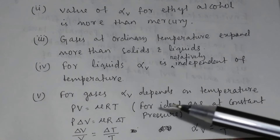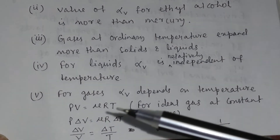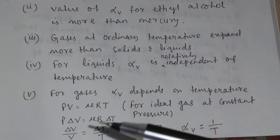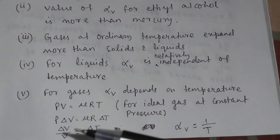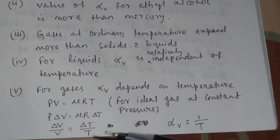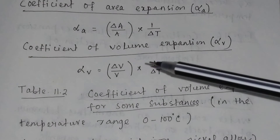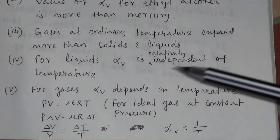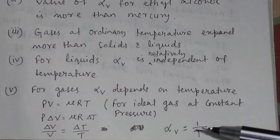How does alpha V depend on temperature for gases? For an ideal gas at constant pressure, the ideal gas equation is PV equal to mu RT. If pressure is constant, then P into delta V equals mu R into delta T. Dividing, delta V divided by V equals delta T divided by T. But from the definition of the coefficient of volume expansion, delta V divided by V equals alpha V into delta T. Therefore, alpha V equals 1 divided by T. This clearly shows that for gases, alpha V depends on temperature.